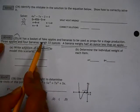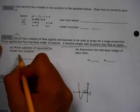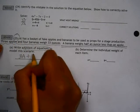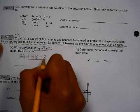So if we read this and write an equation that matches three apples, so 3A, and four bananas, so plus 4B, equals 33.